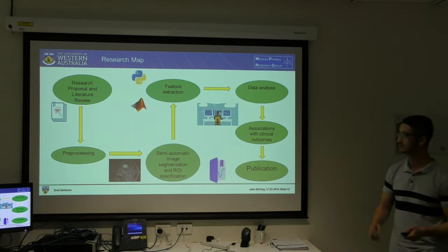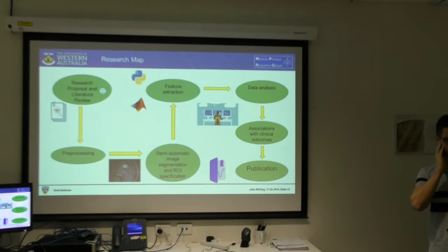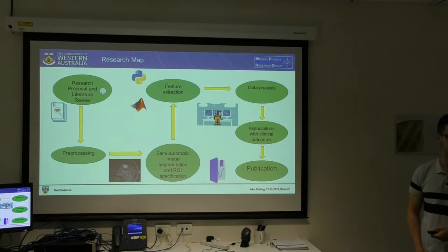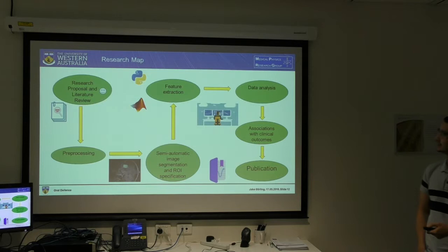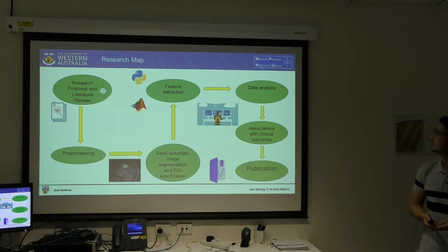This is my research roadmap at the moment. The first step — research proposal and literature review — is done. After exams, we start pre-processing the data, which involves removing any artefacts in the MRI or FET-PET images. Following that, we use semi-automatic image segmentation and region of interest specification. After that, we extract the features and analyse them with statistical measures to assess how well they can predict patient progression and survival. Then we associate these with clinical outcomes using the data we have, and hopefully publish after that.